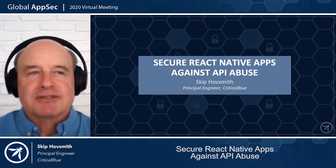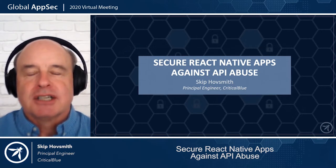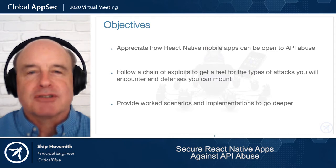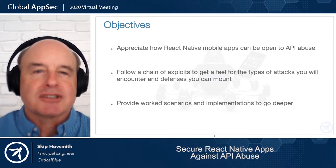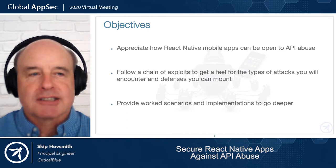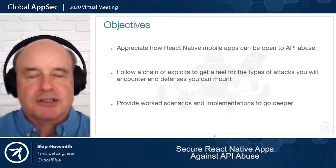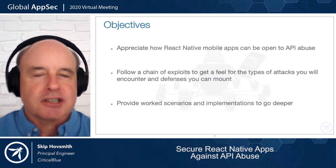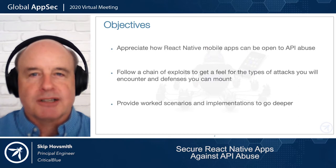The objectives for today's talk are to give you an appreciation for how React Native apps can be exploited for API abuse. We'll do that by following a chain of exploits to show you the types of attacks and the defenses you can mount against them. At the end, I'll give you a link to worked scenarios plus additional stories with full source code so you can go deeper.